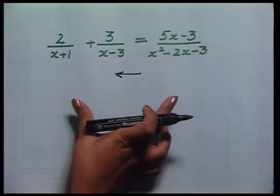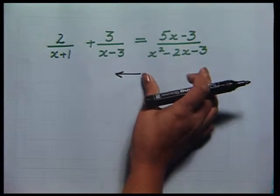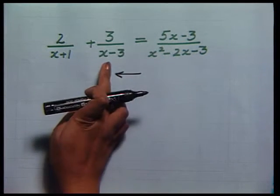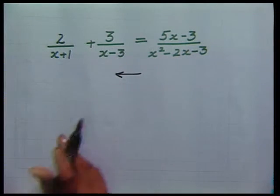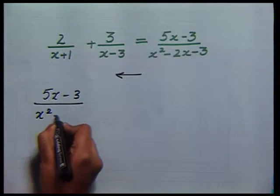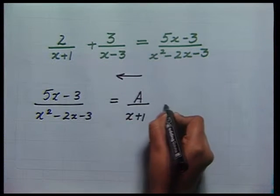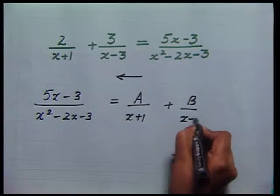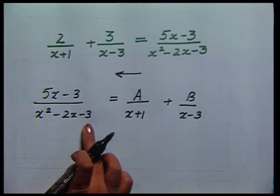You can see how we are going to use this. If I have to integrate this function, right now we do not have any technique to handle it. But if I can break it as this plus this, then the integral of both functions is a very simple task. We can always write (5x-3)/(x²-2x-3) as A/(x+1) plus B/(x-3), where x+1 and x-3 are the linear factors of the polynomial in the denominator.